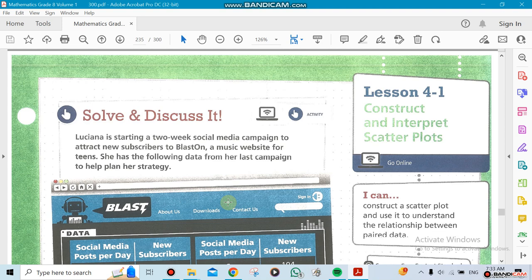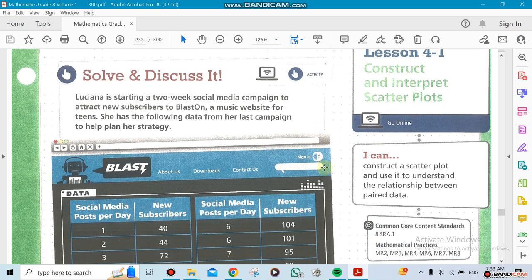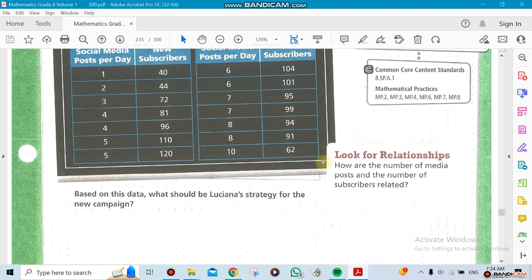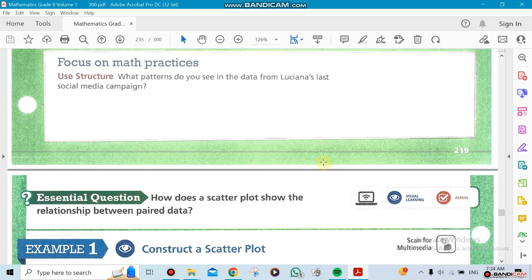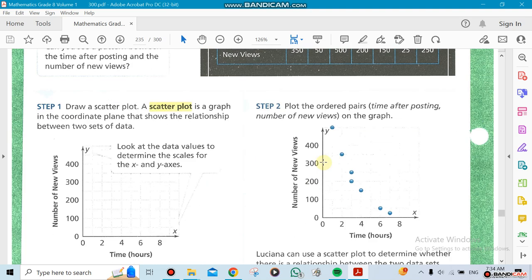Chapter 4 is going to be talking about scatter plots, which is plotting x and y on x and y axes. Now we're going to first construct and interpret scatter point plots. So we have to go to definitions here. First of all, what's a scatter plot?